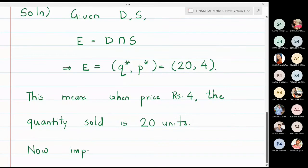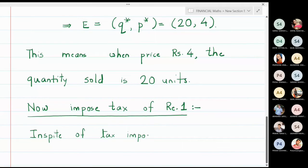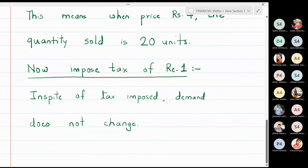Now, a tax of rupee 1 is imposed. When tax is imposed, the demand equation does not change — what changes is the supply equation. The supply set changes.